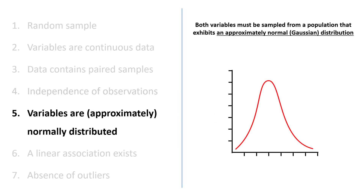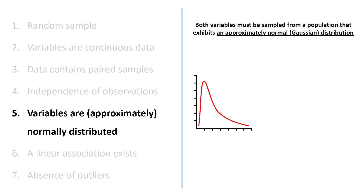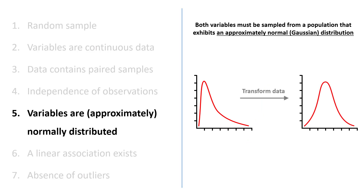The fifth assumption is that the variables are approximately sampled from a normal or Gaussian distribution. Both x and y variables must be sampled from a population that exhibits an approximate normal distribution. Testing your data for normality has been discussed in more detail previously, but the two main methods are to inspect your data on visual plots such as QQ plots and frequency distributions, and to perform normality statistical tests. If one or both of your variables are not sampled from a normal distribution, then the Pearson correlation p-value cannot be correctly interpreted. If this assumption is violated, you can try transforming your data to improve the distribution, or perform correlation tests that do not assume normality of data, for example a Spearman correlation test.